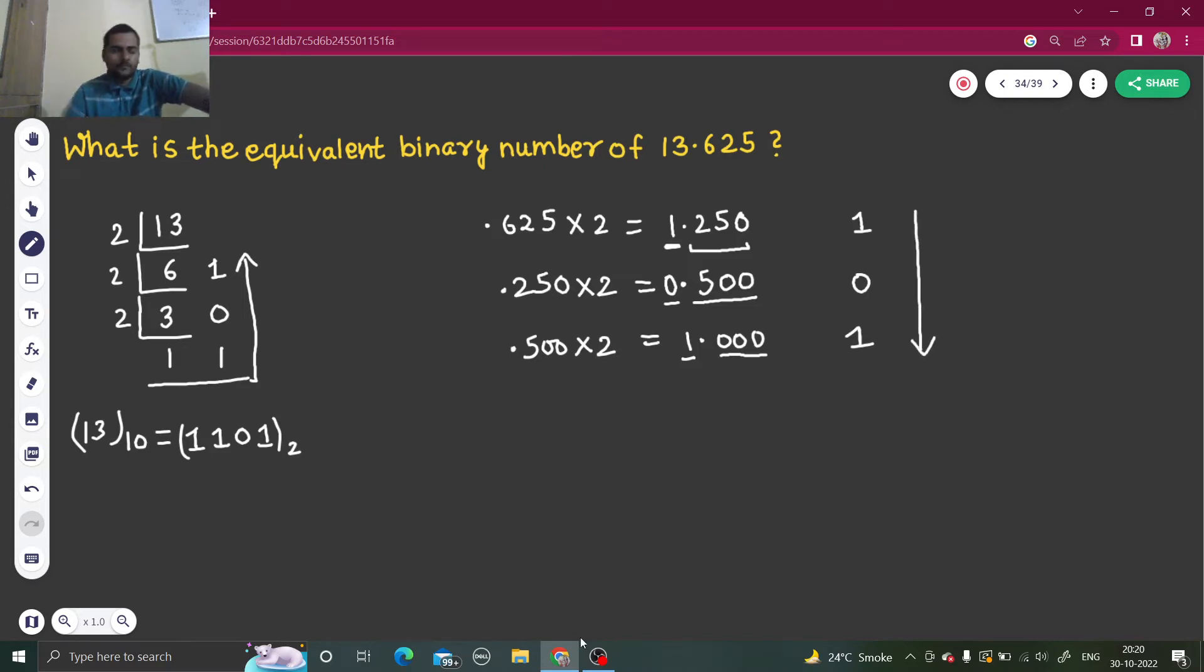This is the moment to stop. While converting 13 to binary we wrote from bottom to top; here we write from top to bottom. So 0.625 is equivalent to 0.101.